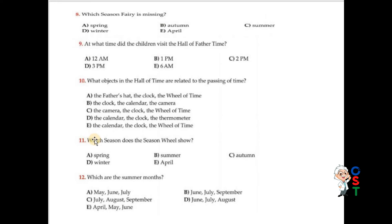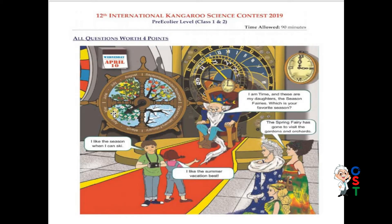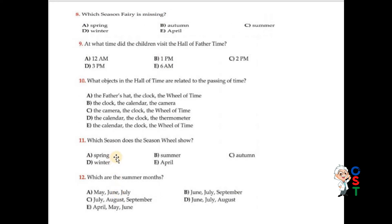Question number eleven: Which season does the season wheel show? It points toward spring — March, April — that is spring. A is correct. Question number twelve: Which are the summer months? Options include June, July, September; May, June, July; July, August, September; June, July, August; and April, May, June. The correct answer is June, July, August. D is correct.